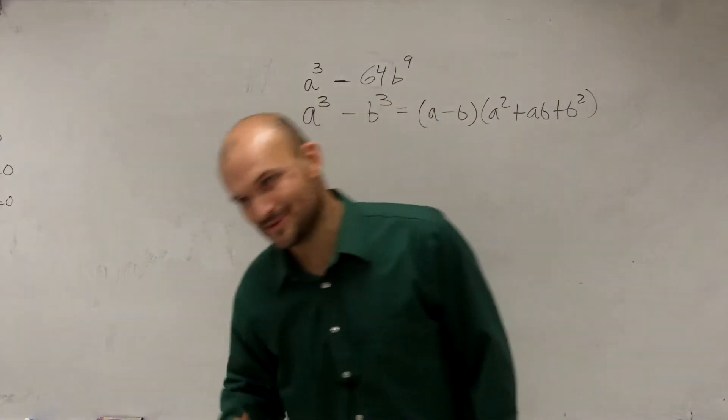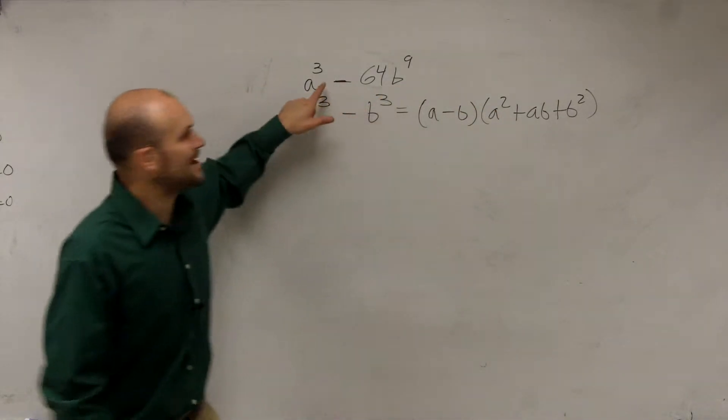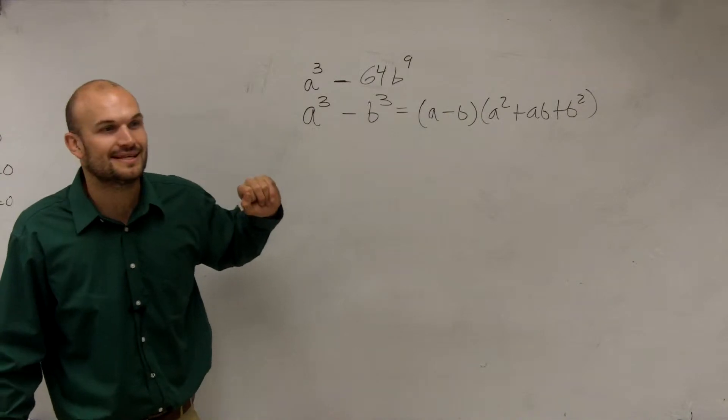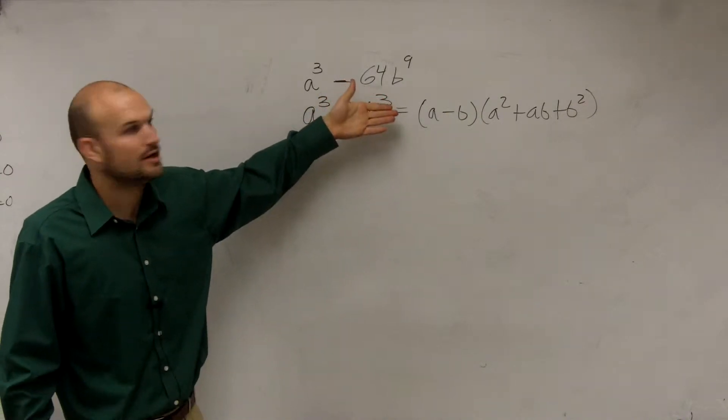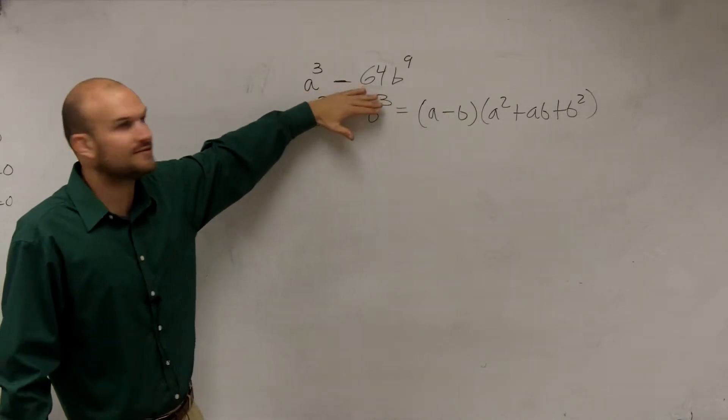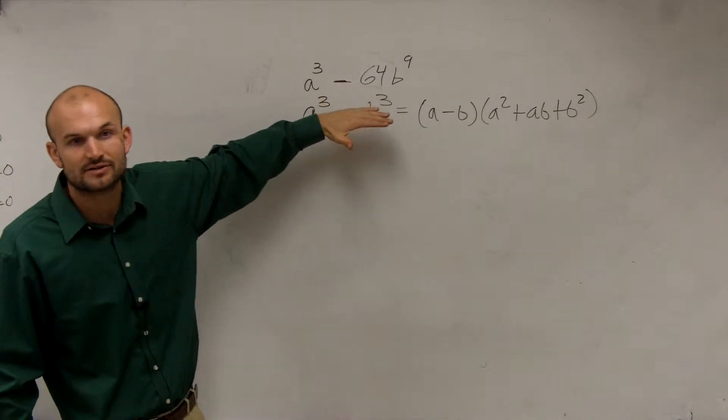So we have a cubed minus 64b to the ninth. That's what we need to learn how to factor. If you look at this by factoring GCF, they don't have anything in common right now that we could factor out.